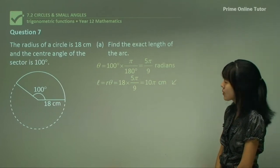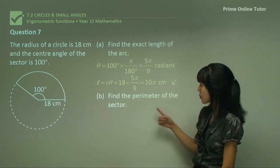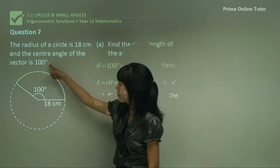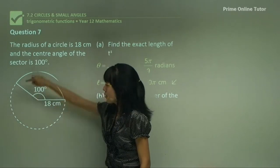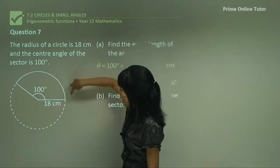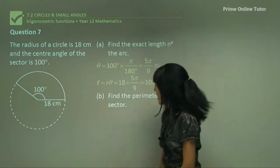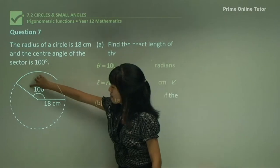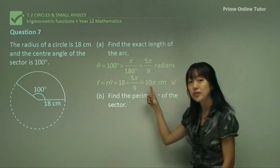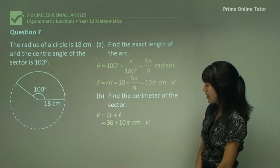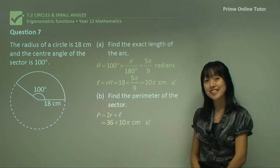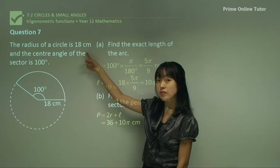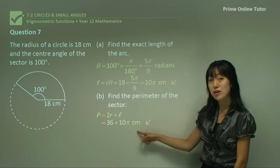The second part asks us to find the perimeter of the sector. The perimeter of the sector is simply the two radii and the length of the arc. All you need to do is 18 plus 18 plus the arc length found in the previous part, which gives 36 plus 10π centimetres. Make sure you write your final answer in the same units given in the question.